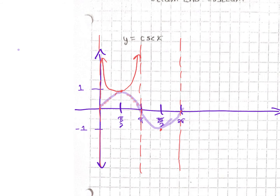Similarly, down here, all those y values — if we take the reciprocal and flip them — end up getting smaller because we're going negative. Having the shape of the sine curve helps you draw the cosecant curve going up, showing asymptotes in each direction, and similarly for the negative portion. What I've drawn in red is our cosecant graph; the purplish pink is just to help us get the right shape.